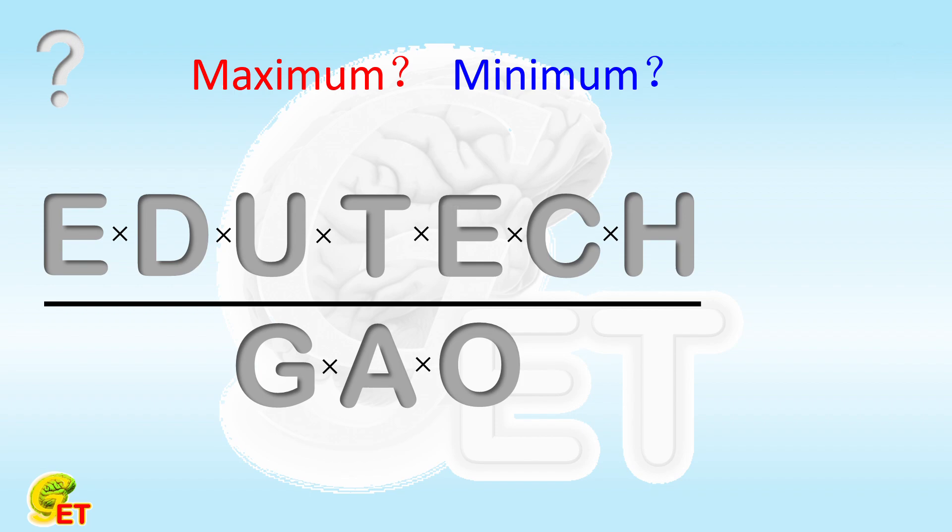The principle of solving this problem is very straightforward. If you want to find the maximum value, you need to make the numerator as large as possible and the denominator as small as possible. For the minimum value, it is the other way around. One more requirement to keep in mind is that the result has to be an integer.